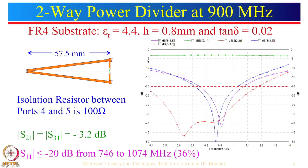Looking at the simulated results: the input is at port 1, so S21 and S31 are shown in green — this is minus 3.2 dB. Ideally it should be minus 3 dB, but because we used a lossy substrate, some losses occur and instead of minus 3 dB it comes out to minus 3.2 dB.